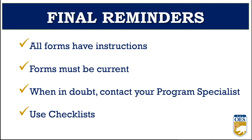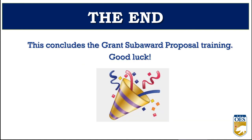Final things to remember: all forms have instructions, use the forms on the website for the most current versions, the checklist in the request for proposal tells you which forms are required, and email your program specialist if you have questions — we are here to help. Use the checklist in Part 5 of the request for proposal. This concludes the request for proposal and application overview training for the Listos California Tribal Grant Program. This presentation has been recorded and will be available for on-demand viewing on the CalOES website. Please remember to email your questions to listosgrants@caloes.ca.gov. Thank you all for attending today. Goodbye.